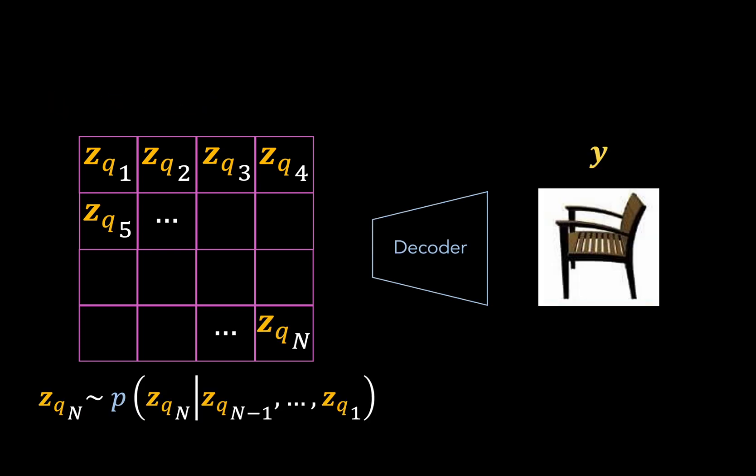So say we want to sample some image from the learnt prior. What we would do is first generate all of our codewords by ancestral sampling in a raster scan order until we've selected every codeword. And then we just decode as usual. Now of course the question is, how do we learn these conditional distributions to use in our sampling? And that's where the use of autoregressive models comes in.